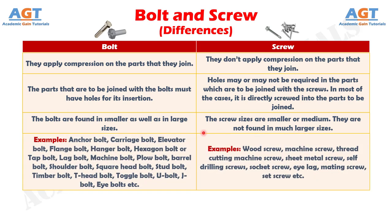Number 12: Examples of bolts are anchor bolt, carriage bolt, elevator bolt, flange bolt, hanger bolt, hexagon bolt or tap bolt, lug bolt, machine bolt, plow bolt, barrel bolt, shoulder bolt, square head bolt, stud bolt, timber bolt, T-head bolt, toggle bolt, U bolt, J bolt, and I bolt.